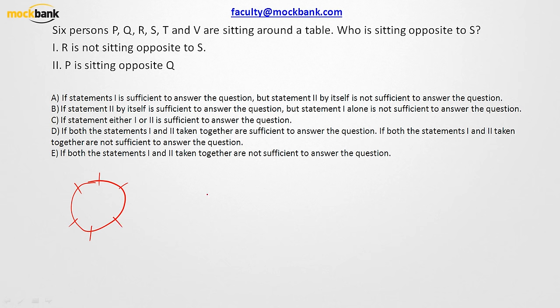Statement number one says that R is not sitting opposite to S. So how many people do we have? We have P, Q, R, S, T and V.